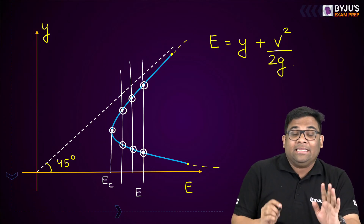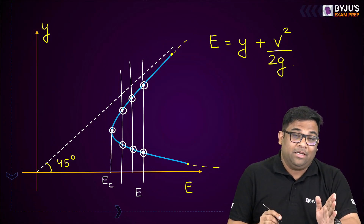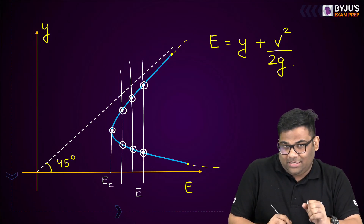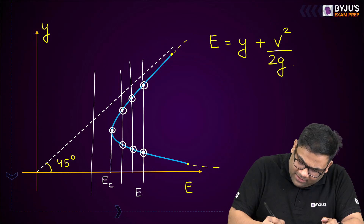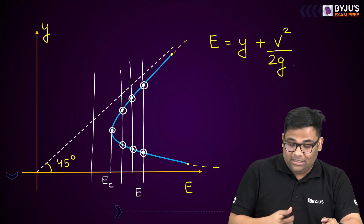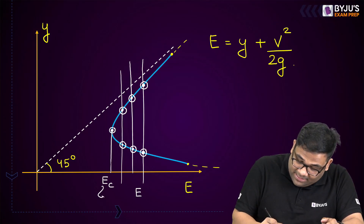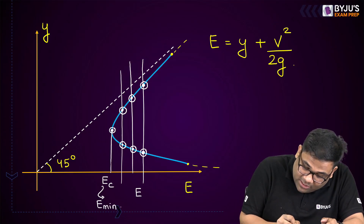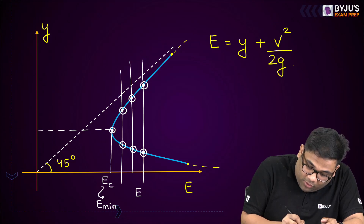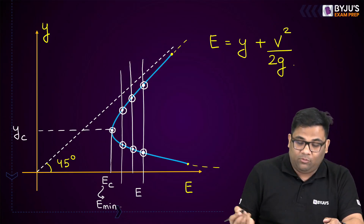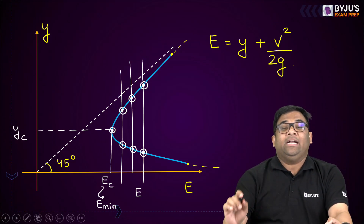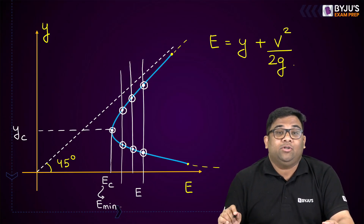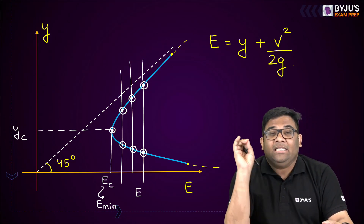There is no flow possible below the critical specific energy. This particular specific energy is the minimum specific energy. Corresponding to this critical depth Yc, I am getting the minimum specific energy, or we can say the critical specific energy.